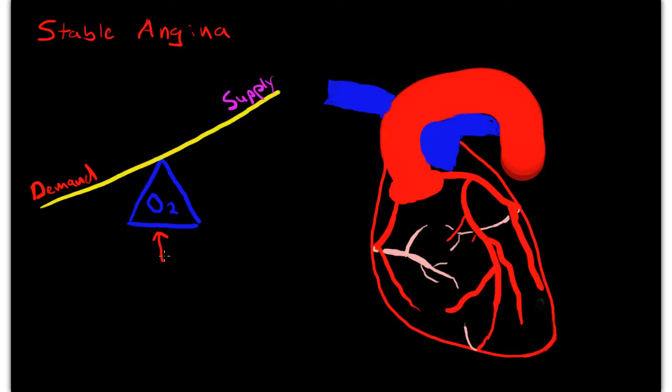So what do I mean by a mismatch between oxygen demand and supply? Demand actually increases, oxygen demand increases in the myocardium when the heart rate increases, when there is increased contractility, so the muscles are working faster and they're working harder. And supply actually is primarily when we talk about supply of oxygen to the myocardium, we're mostly talking about perfusion and to a lesser degree systemic oxygen saturation and hematocrit. But the primary variable is perfusion.